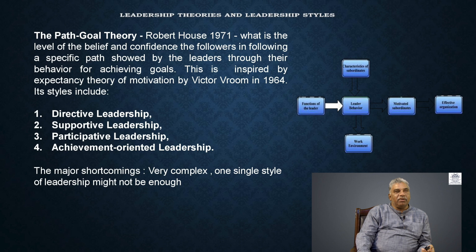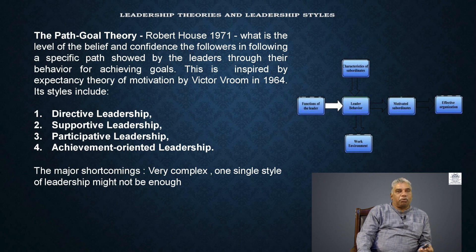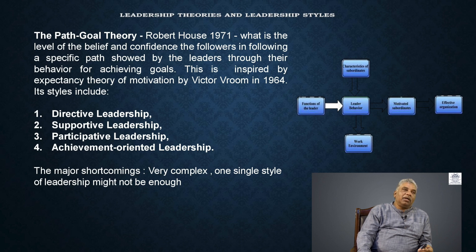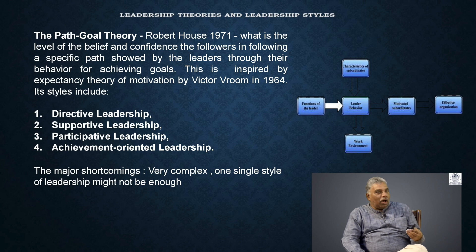Robert House, way back in 1971, came out with a model akin to Victor Vroom's motivation theory. The similar way, Robert House postulated a theory called the Path-Goal Theory. Path-goal theory is simply this: there is a path and there is a goal. The paths are taken from Vroom's motivational theory — directive path, supportive path, participative path, and achievement-oriented path. The goal may vary from person to person and organization to organization.